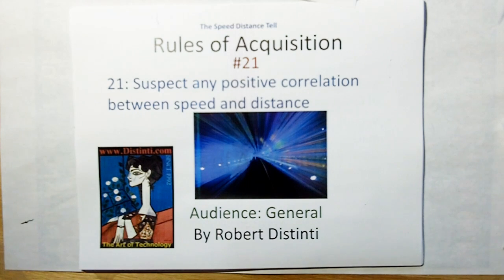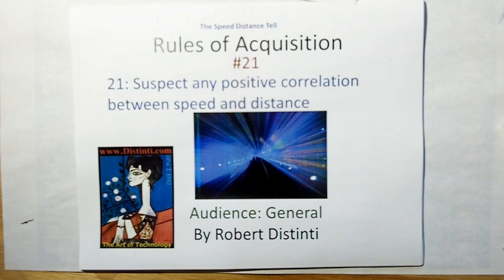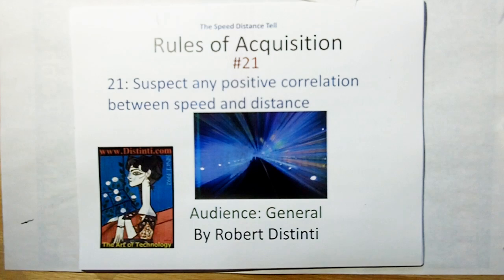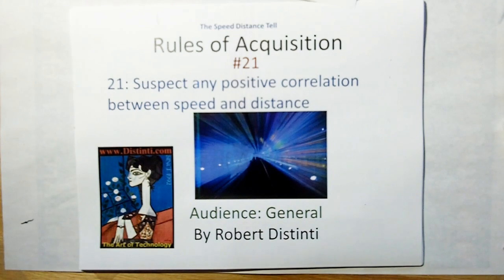Basically, that means suspect any positive correlation between speed and distance. In other words, the farther you go, the faster you go; the higher you go, the faster you go — things like that. This doesn't include inverse correlations like the farther away you are, the slower you go. Those are okay.